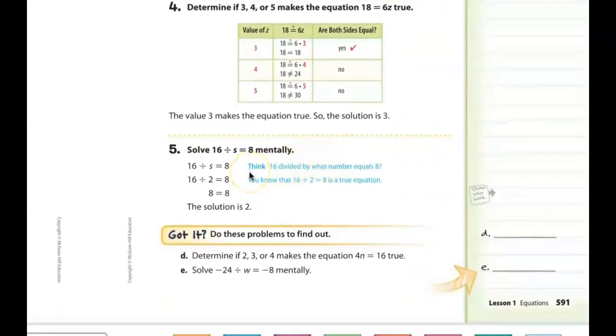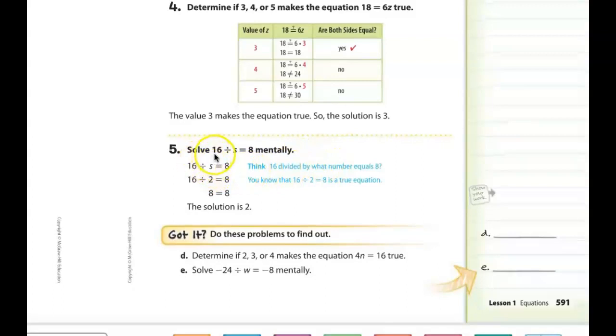So solve 16 divided by s equals 8 mentally. 16 divided by s is equal to 8. So we are going to think, what number, if I'm doing the opposite here, what number times 8 is equal to 16? They came up with the number 2. 16 divided by 2 equals 8. And this basically is just whether or not you know your basic facts. So 8 is equal to 8. The solution is 2.